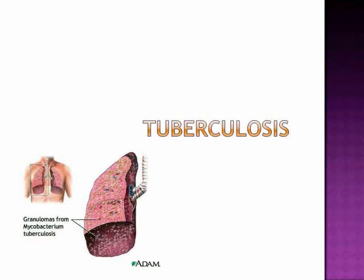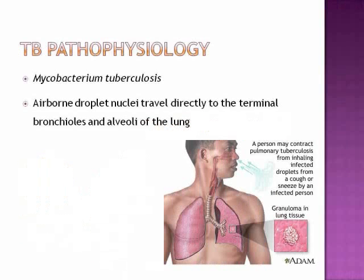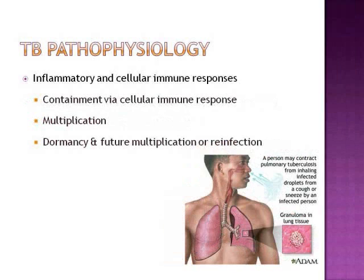Tuberculosis. TB is caused by Mycobacterium tuberculosis. It is an airborne droplet spread, and they travel directly to the terminal bronchioles and alveoli of the lung. There is an inflammatory and cellular immune response, and we see three stages: containment, multiplication, and dormancy.